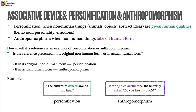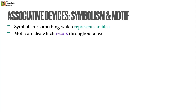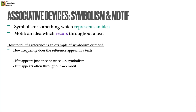Next up, symbolism and motif. Symbolism is when something — usually an object, sometimes a gesture — represents a bigger idea. Motif, however, is about an idea which recurs throughout a text. To tell them apart, it's to do with frequency. How frequently does the symbolic reference appear? If it appears just once or twice but carries lots of significance, then it's symbolism. But if it appears throughout a text, then it's motif.